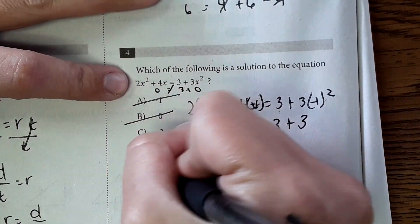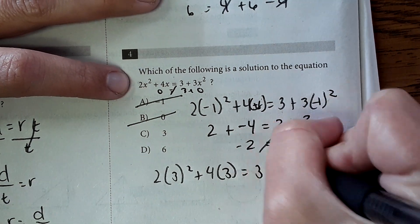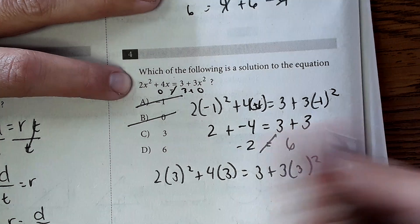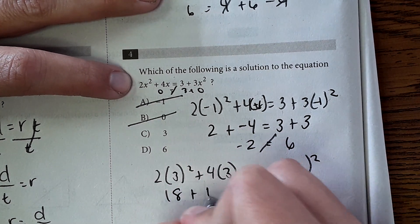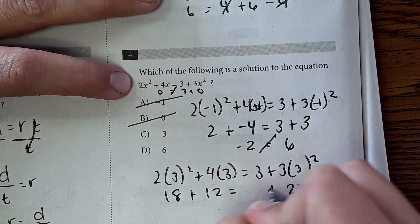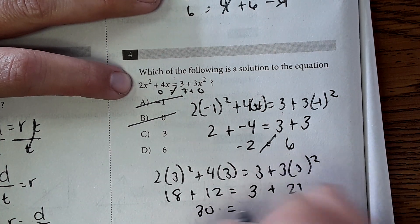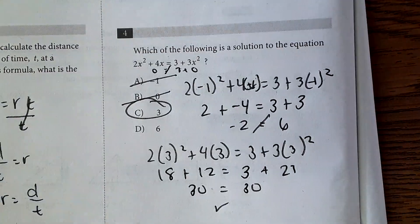With C, two times three squared plus four times three equals three plus three times three squared. So just quickly solving this, nine times two is 18 plus 12. Three squared would be nine, nine times three is 27, plus three. I get 30 equals 30. Great, that means C is my correct answer. And moving on to the next question.